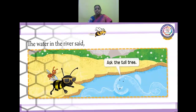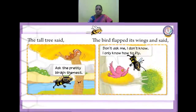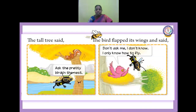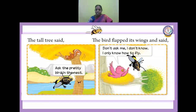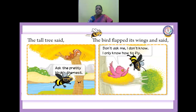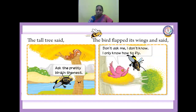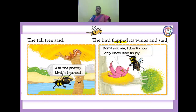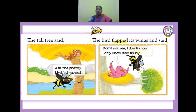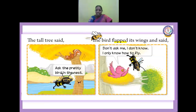The tall tree said: ask the pretty bird in the nest. It asked, and the tall tree replied: you ask the pretty bird. I don't know your name. What is the home of the bird? The nest. The bird flapped its wings and said — what do you mean by flapped? F-L-A-P-P-E-D. Flapped means moving the wings up and down. The bird said: don't ask me, I don't know. I only know how to fly. Now it remembered — its name is Fly!